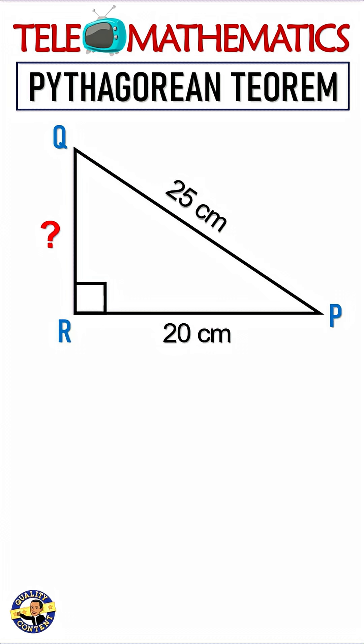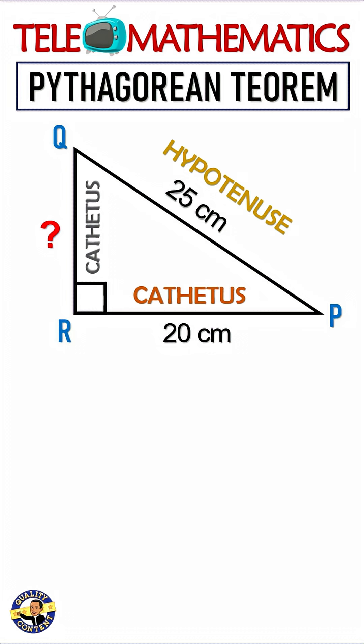To begin, we remember that being a right triangle, one side is called cathetus, and the other two are cathetus and hypotenuse. Applying the Pythagorean theorem, it is fulfilled that the square of the length of the hypotenuse is equal to the sum of the squares of the cathetus lengths.